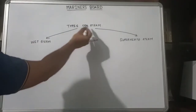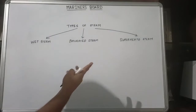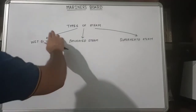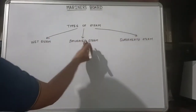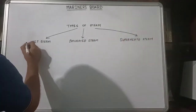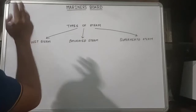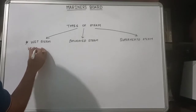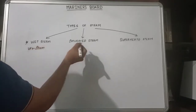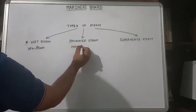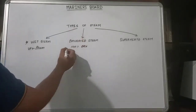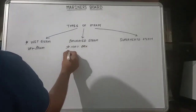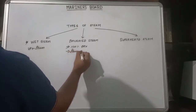Before understanding the basics of boilers, let's look at the basics of steam. There are basically three types of steam: wet steam, saturated steam, and superheated steam. Wet steam has water vapors along with the steam. Saturated steam is 100% dry and does not contain any water vapor. The amount of vapors present in steam can be expressed by the steam dryness fraction. If steam contains 10% water by mass, it is said to be 90% dry, or has a dryness fraction of 0.9.